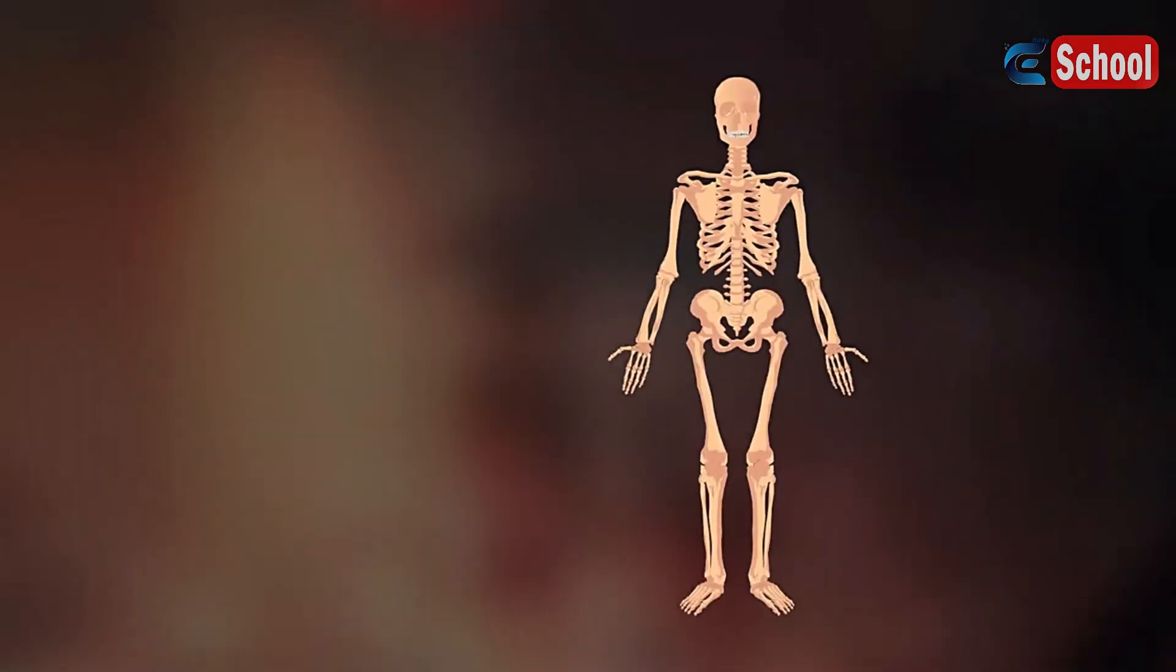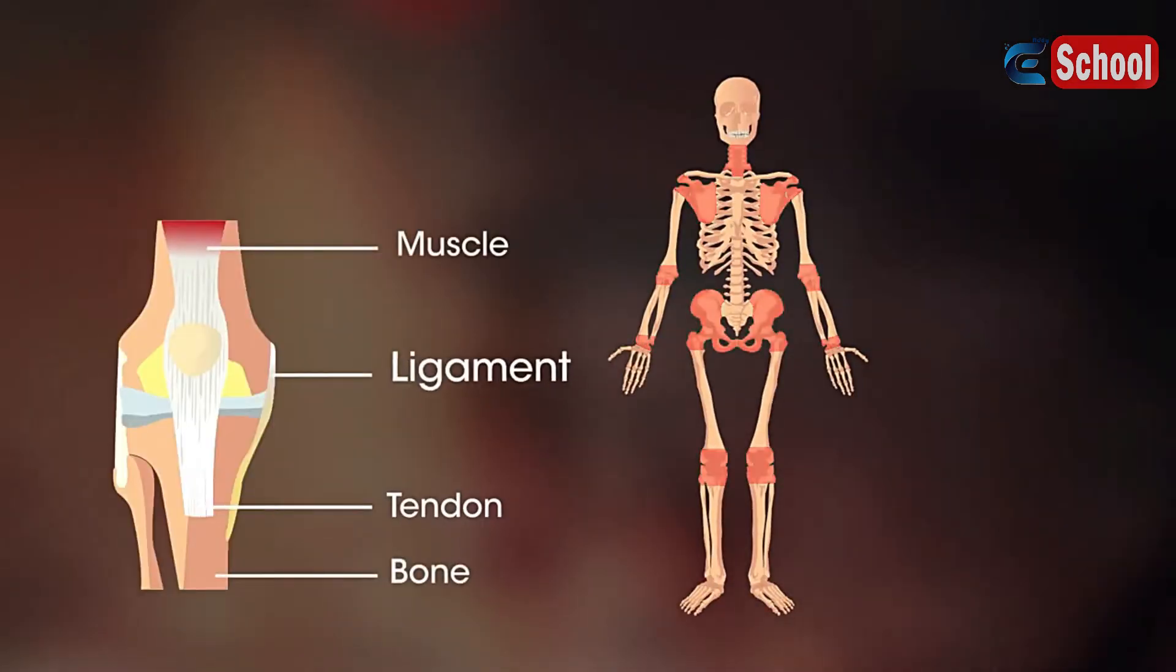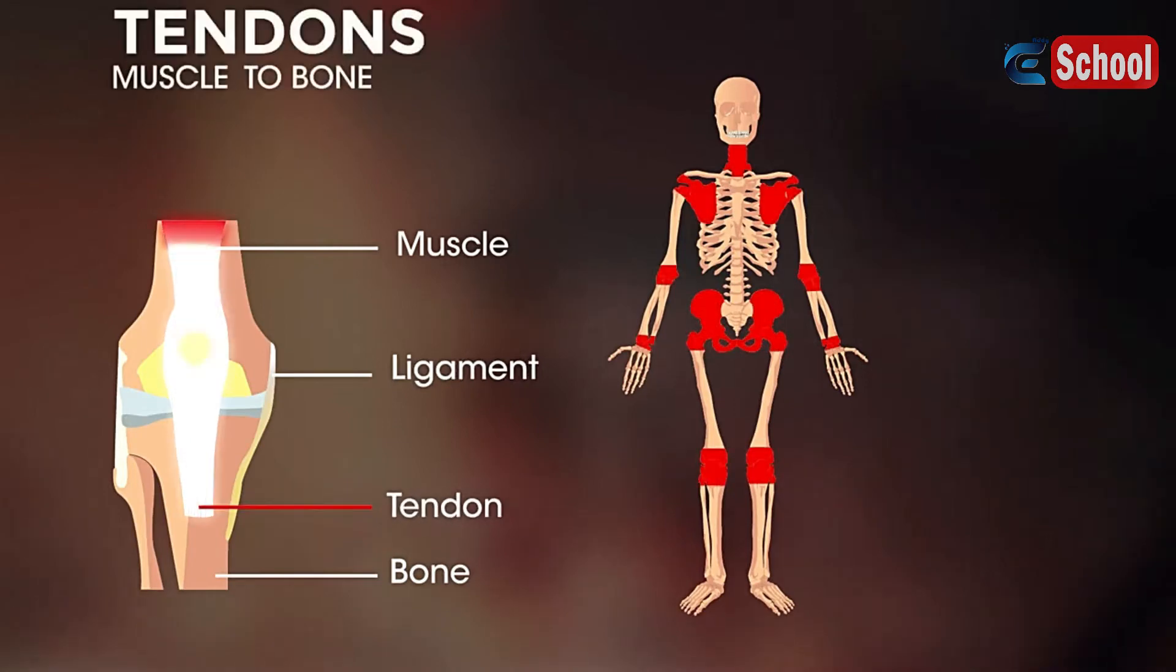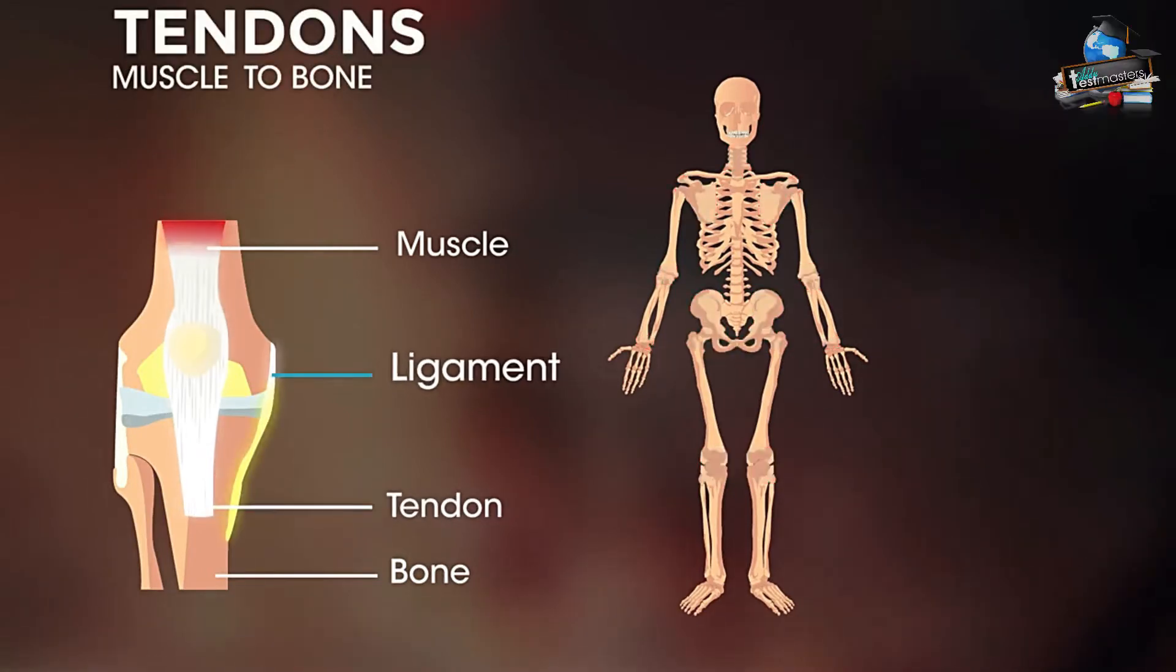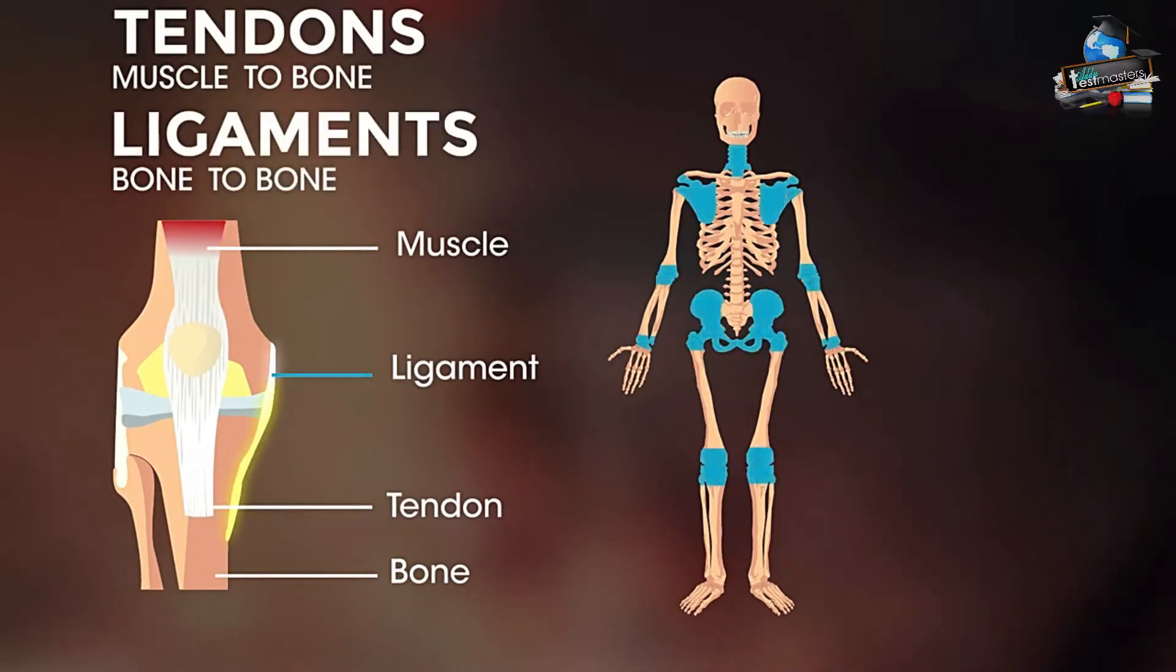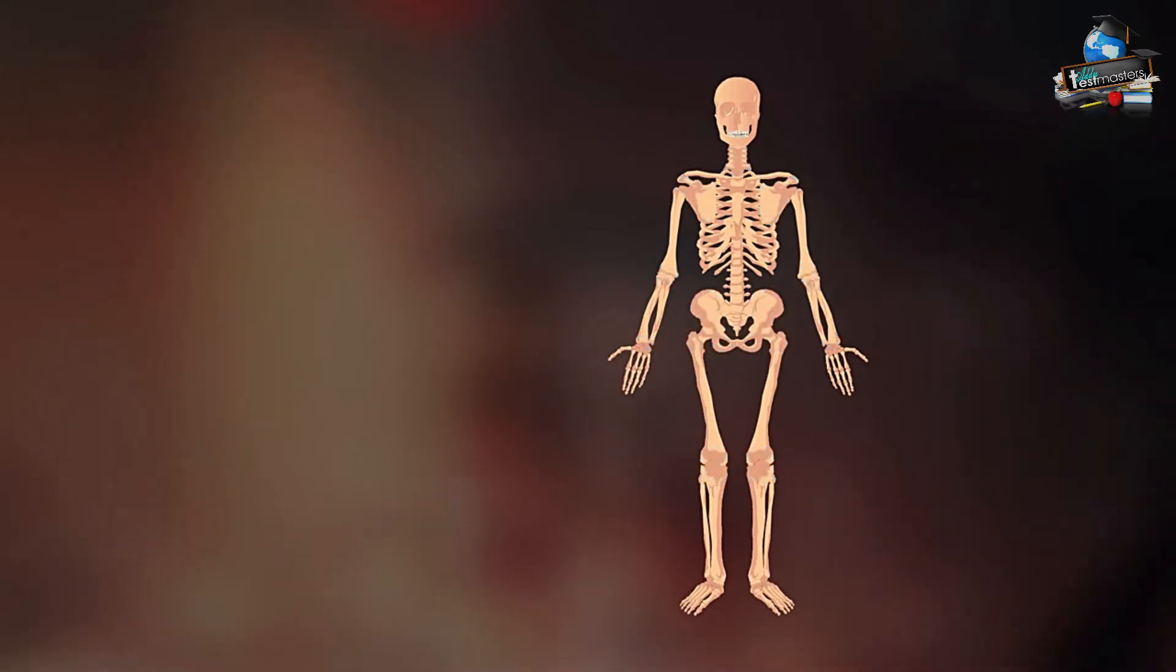But joints can't work alone. They need tendons and ligaments too. Tendons attach muscles to bone whilst ligaments connect bone to bone. They are needed to stabilize joints. Without tendons and ligaments our bones wouldn't stay together and we would just be a pile of bones on the floor.